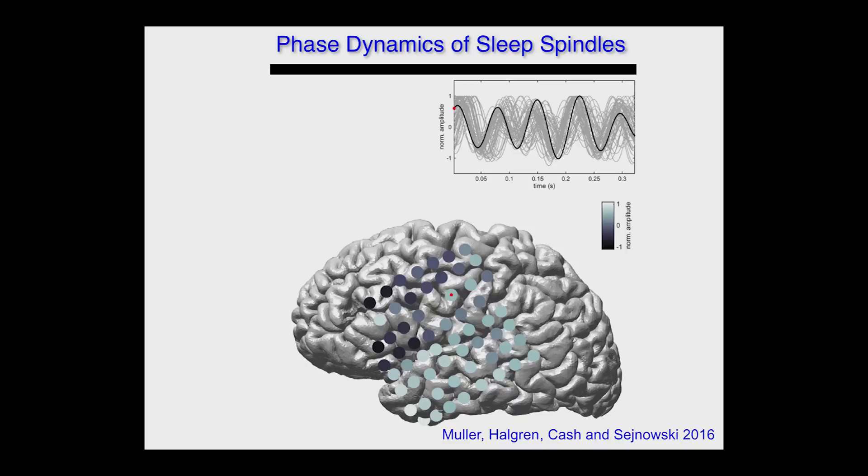I've done very detailed biophysical modeling and can tell you precise mechanisms that give rise to the spindles. It involves new ion channels that are uncovered when cells hyperpolarize — when the membrane potential goes down. But what I would never have guessed is how the activity between the thalamus and the cortex organizes itself. In the textbooks it's described as synchronous — occurring at the same place in the cortex at exactly the same time. It is approximately synchronous, but I wanted you to decide for yourself how synchronous it really is.